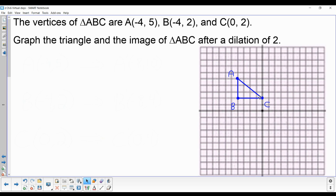So there is the original triangle with point A, B, and C with the coordinates that we were given in the directions. Now to graph the image all I have to do with a dilation of 2 is multiply everything by 2.